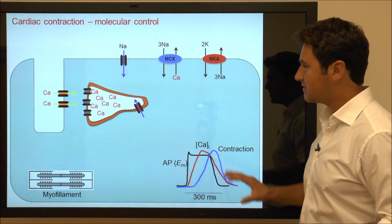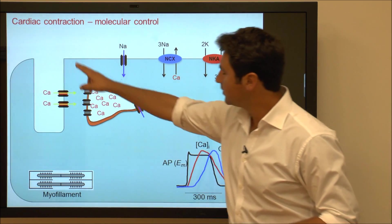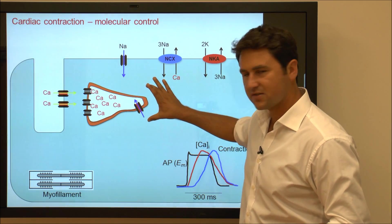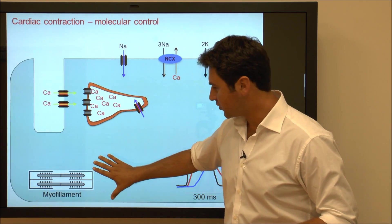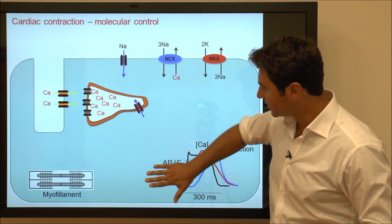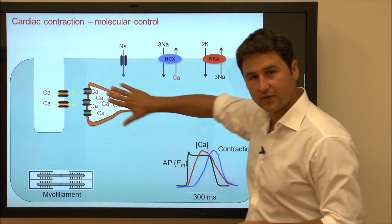This is a classic example of a cardiac myocyte with T-tubules shown here, just next to the sarcoplasmic reticulum which is a calcium store, myofilaments shown at the bottom, although realistically myofilaments are present throughout the cardiac myocyte.